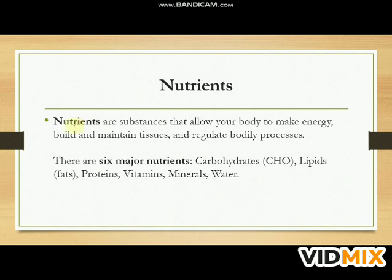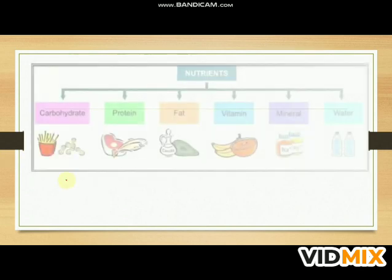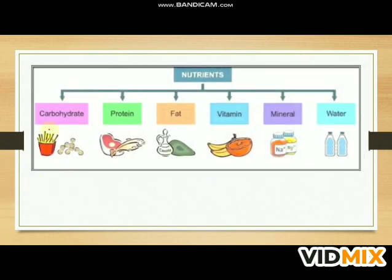Nutrients are substances that allow your body to make energy, build and maintain tissue, and regulate body processes. There are six major nutrients: carbohydrates, lipids, proteins, vitamins, minerals, and water. We have read in previous classes about the major sources of carbohydrates, proteins, fats, vitamins, and minerals. Water is a very essential part of our food — it helps to digest the food.